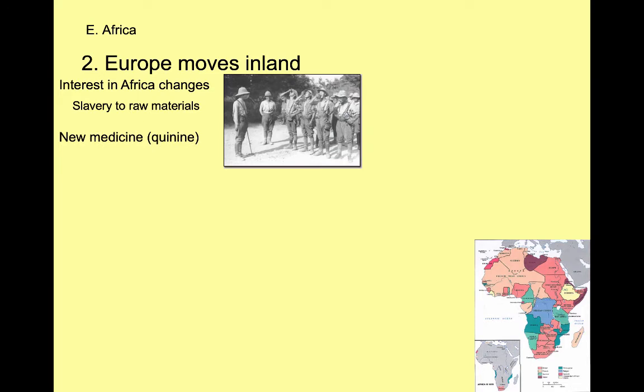Next, a new medicine was developed called quinine. Quinine comes from a tree in South America, and once the Europeans figured out that quinine could be used as a treatment for malaria, there was no longer a disease keeping them from getting into Africa. So this is another thing that allowed Europeans to enter Africa — they had the desire to get there for raw materials and markets, and they also had the ability because of this new medicine, quinine.